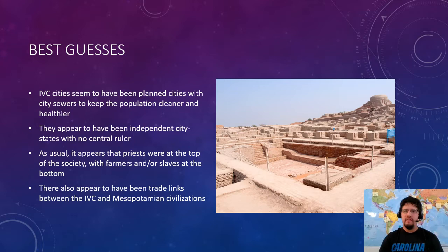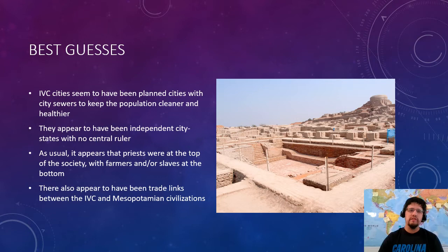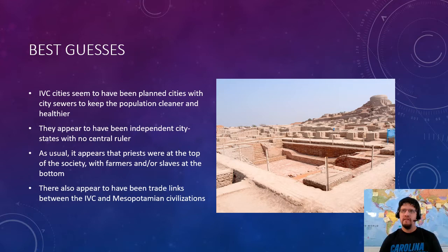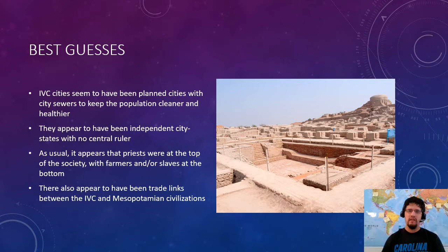The best guesses we have are that the Indus Valley civilization planned their cities — they laid everything out in blocks, not random scattershot. They had open sewers, which you wouldn't want to live next to, but that's a lot better than waste going into your water supply, which is what other civilizations were doing. They appear to have been independent city-states like Sumeria, not a unified civilization like Egypt. Priests are at the top, farmers and slaves at the bottom. And there do appear to have been trade links between the IVC and Mesopotamia, though those links haven't been firmly established.